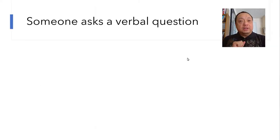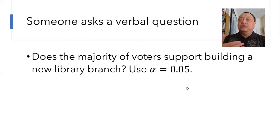In Inferential Statistics, someone asks a verbal question like, does the majority of voters support building a new library branch? Use alpha equals 0.05 significance level.